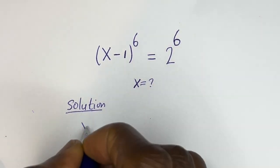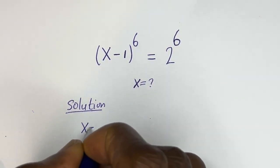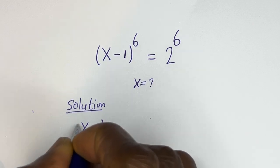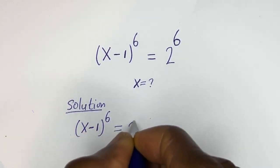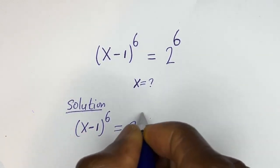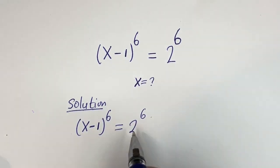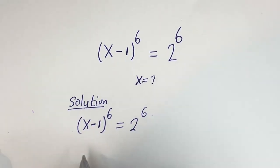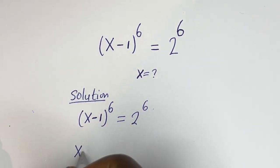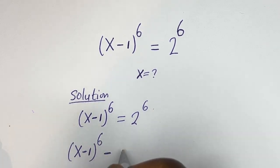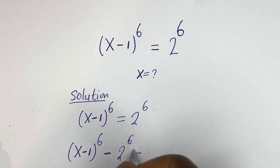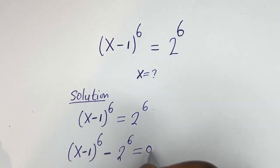We have x minus 1 to the power of 6 is equal to 2 to the power of 6. Let's bring this to this side: x minus 1 to the power of 6 minus 2 to the power of 6 is equal to 0.